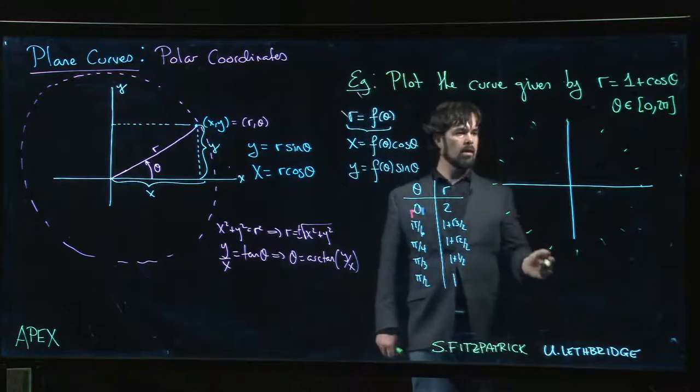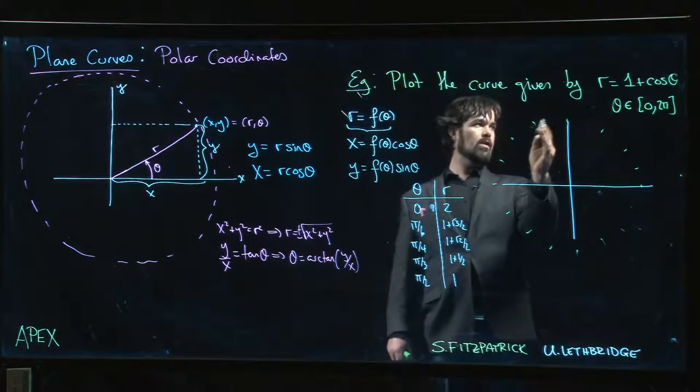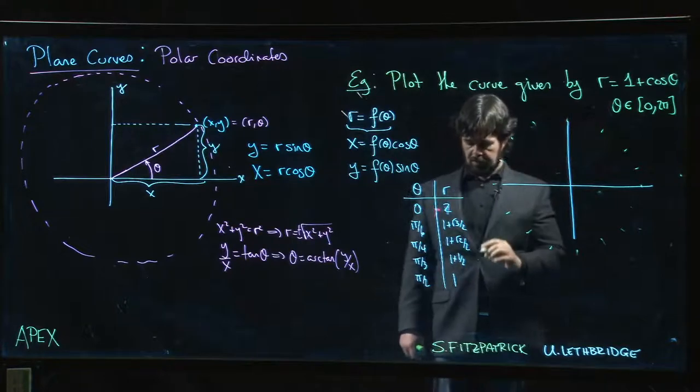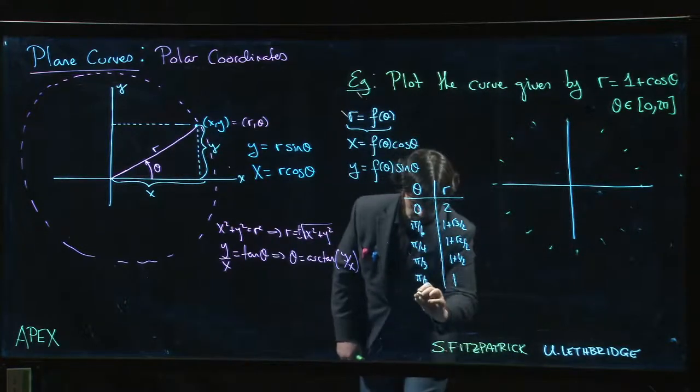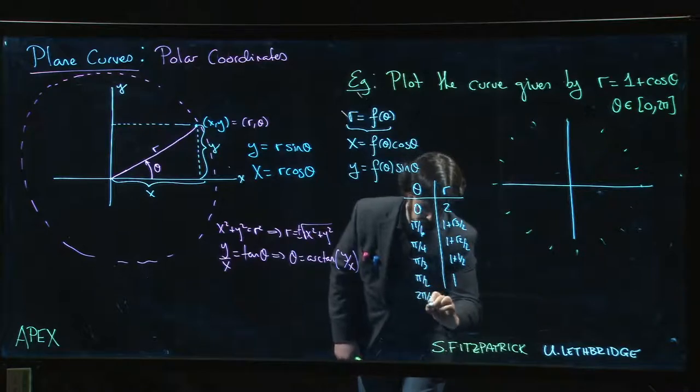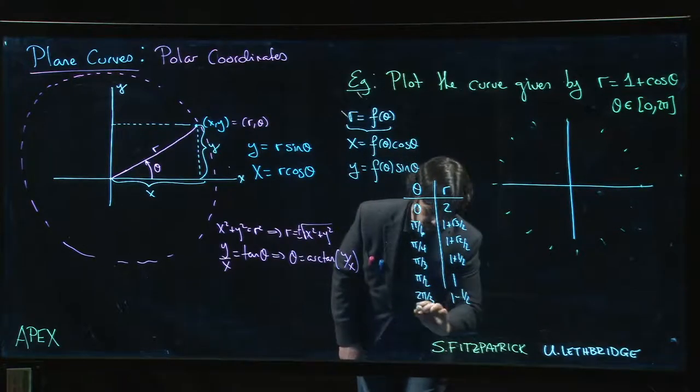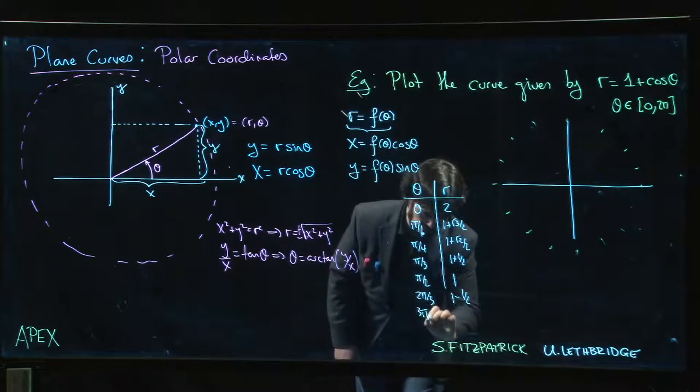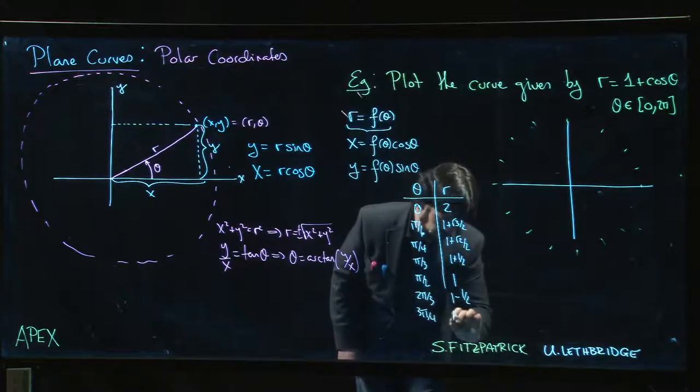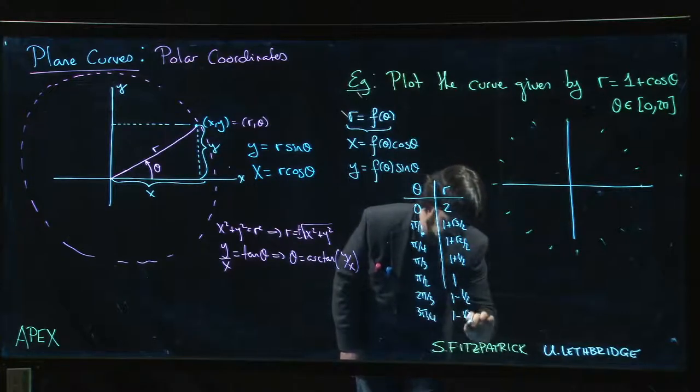And if I were to keep going, once I get into the second quadrant r becomes negative. Then I'm going to have, if I were to keep going to two pi over three, I have one minus a half. Then I'm at three pi over four and I've got one minus root two over two and so on.